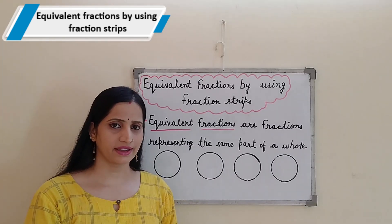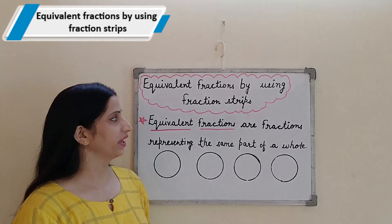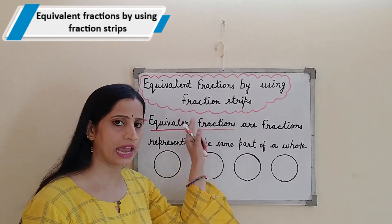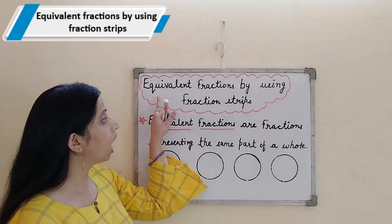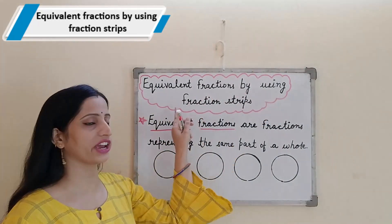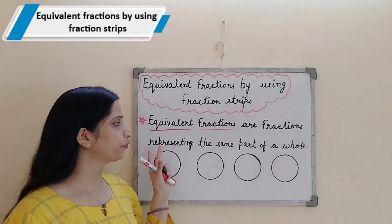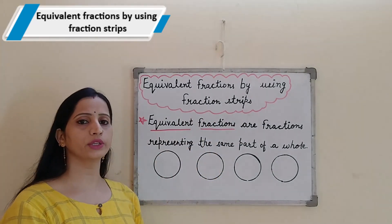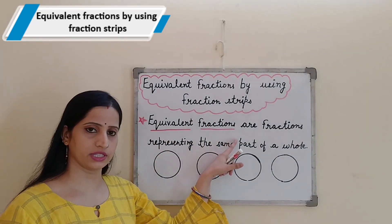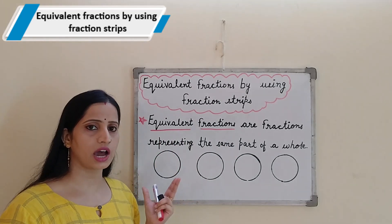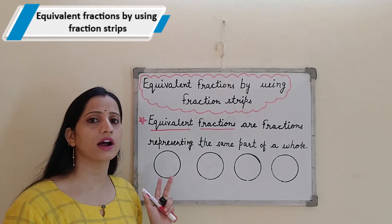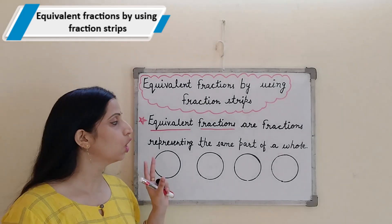Hello friends, welcome back. So today we will learn about equivalent fractions and how to find out equivalent fractions by using fraction strips. So first I am going to explain the meaning of equivalent fractions. Equivalent fractions are fractions that represent the same part of a whole.